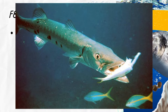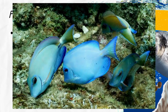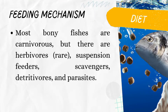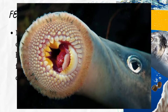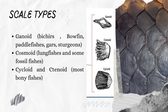In terms of feeding mechanism, most bony fishes are carnivorous, meaning they hunt other fishes or animals to feed on. But there are also some herbivores, which are considered rare, suspension feeders, scavengers which feed on scraps left by other predators, detritivores meaning they feed on dead animals, and parasites which get their food by means of parasitism.